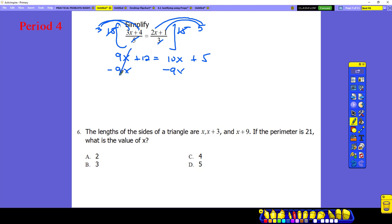10x, cancel this one out, we get 12 equals, what's 10x minus 9x? That's 1x plus 5. And finally, we subtract 5 both sides, we get x equals 7.